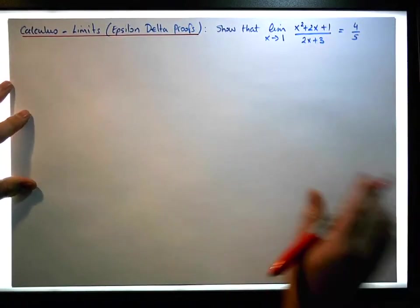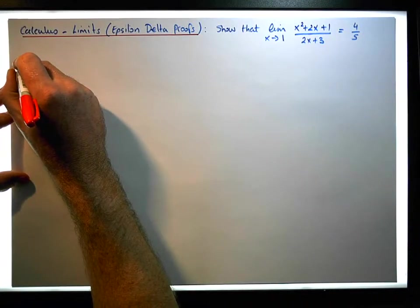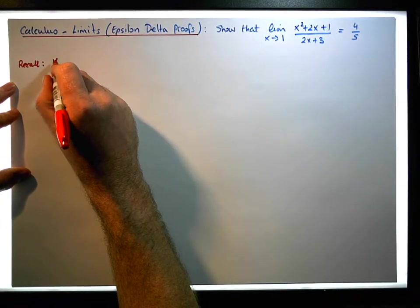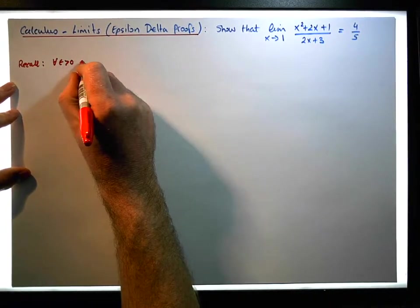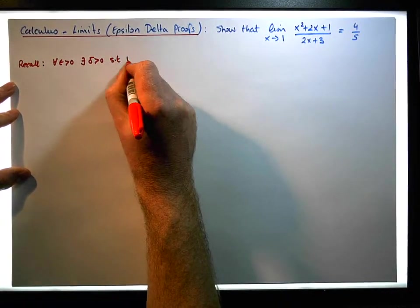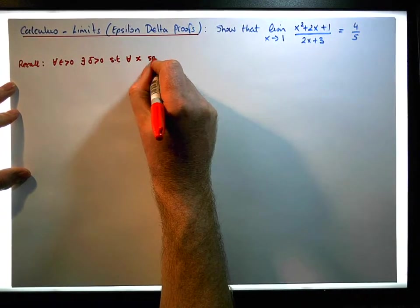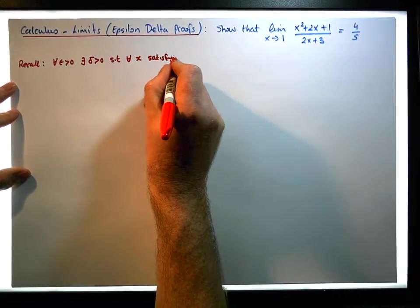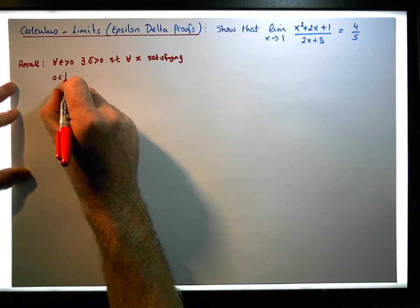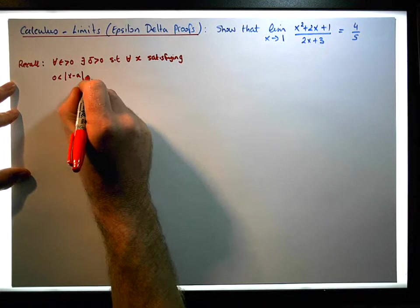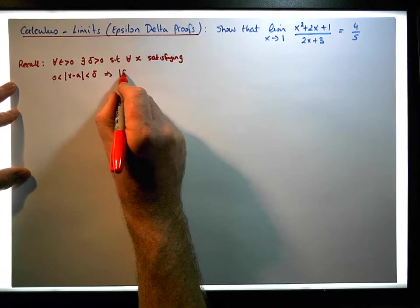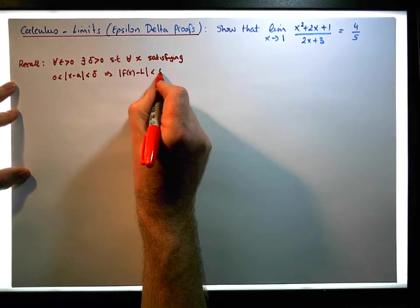Let's just recall the definition of a limit. The definition says: for each and every epsilon greater than 0, there exists a delta greater than 0, such that for each and every x satisfying the condition that 0 is less than the absolute value of x minus a, which is less than delta.